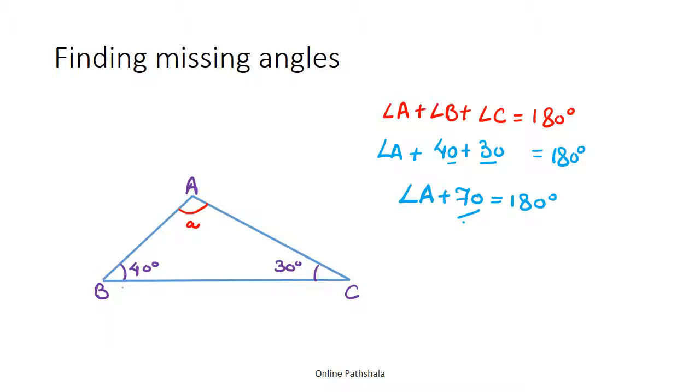So what plus 70 gives us 180 degrees? For that we need to subtract 70 from 180 degrees. Therefore, angle A is 180 degrees minus 70, and that gives us angle A as 110 degrees.